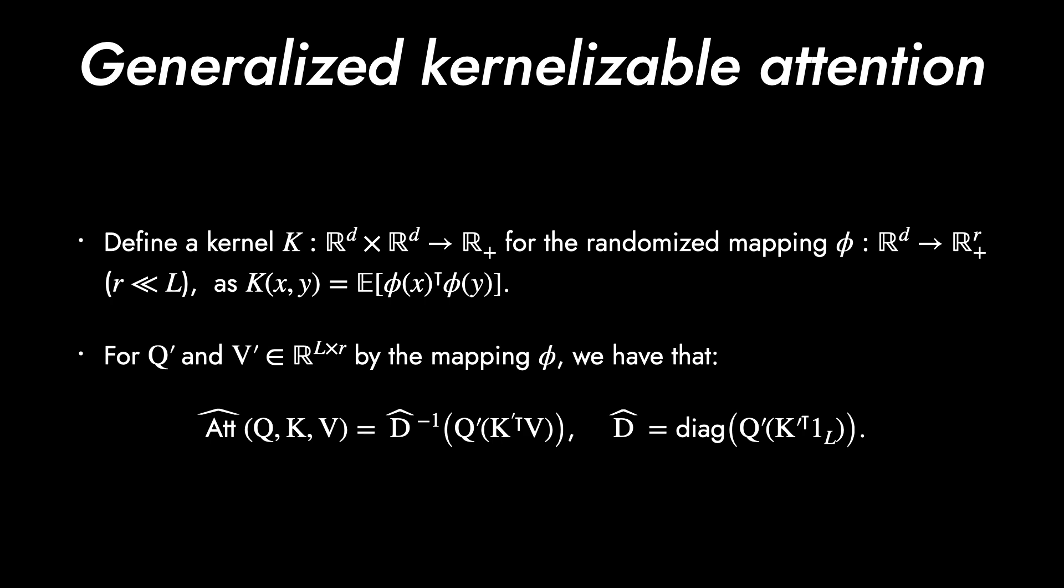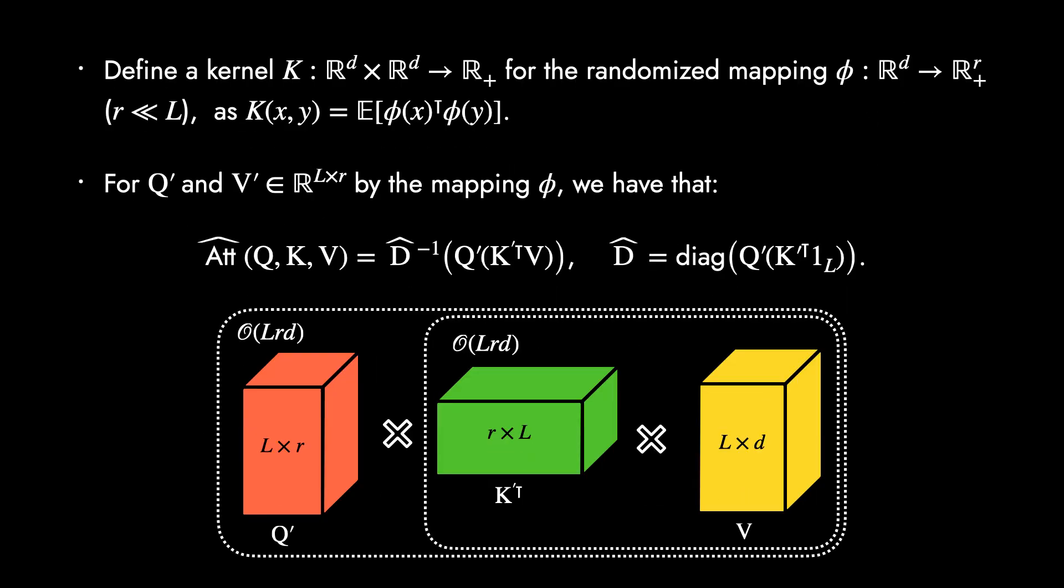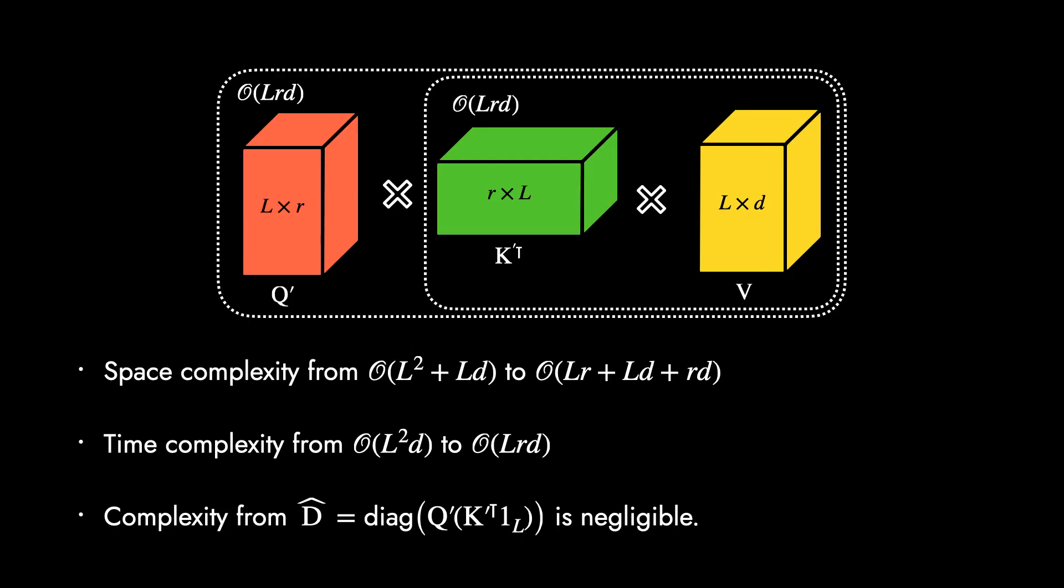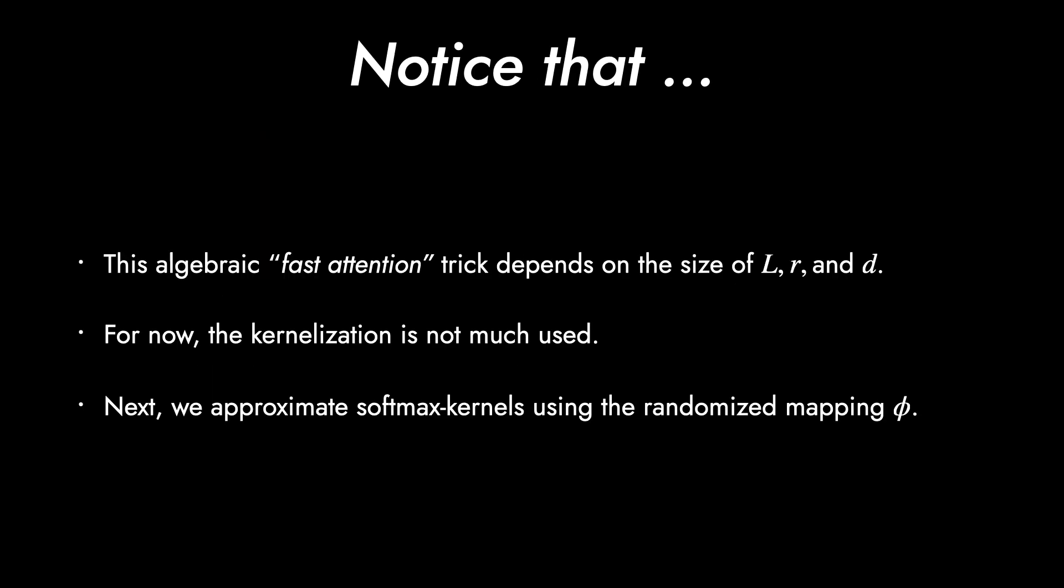We use the wide hat for the approximated result. Since it is infeasible to get the exact expectation value, notice the computational order of the diagonal matrix D hat. The row sum of the transposed K prime is done before the product with Q prime. This computation will relieve the burden to explicitly compute the attention matrix A. So this kernelized attention keeps the time complexity in O of LRD. In the following slides, we will discuss the candidate randomized mapping functions based on Gaussian distribution.